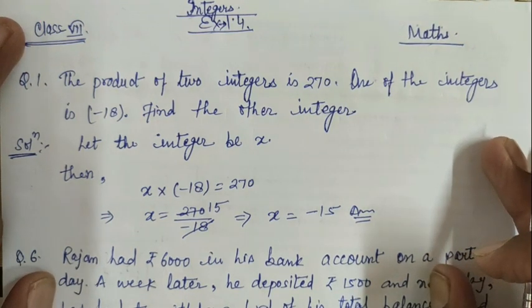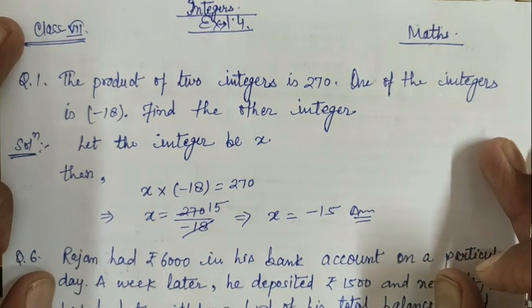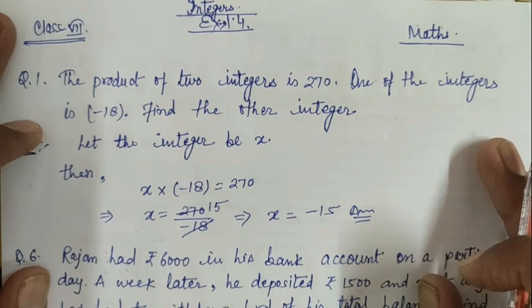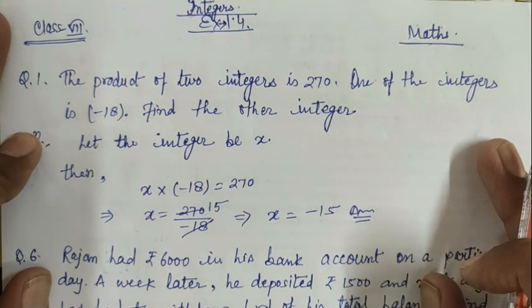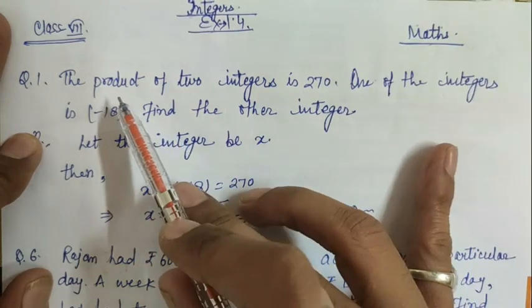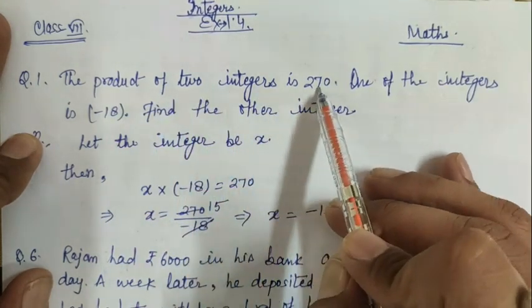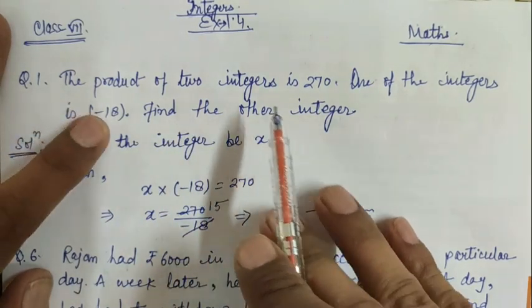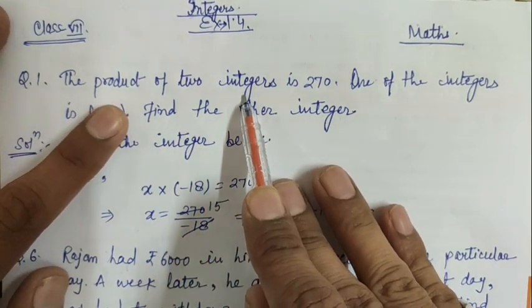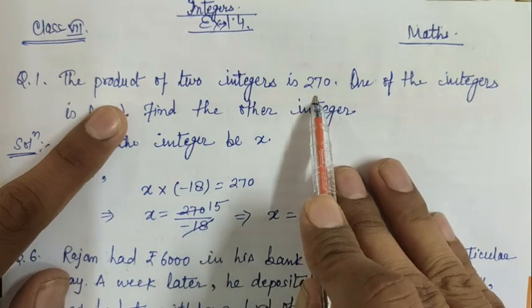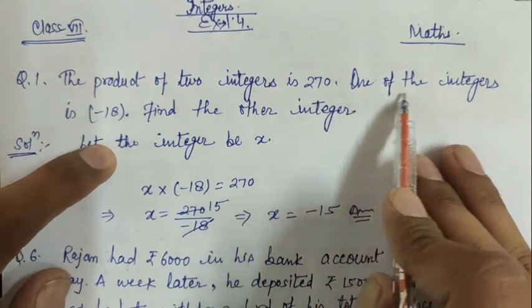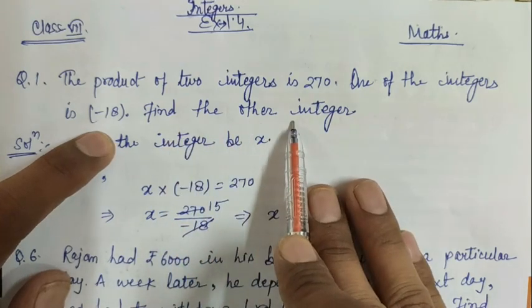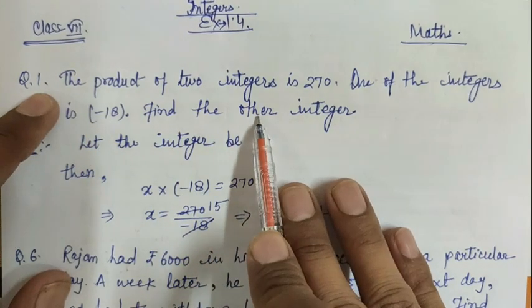Hello students, welcome to math online classes. In this video we will solve word problems related to integers. Our first question is: the product of two integers is 270. One of the integers is -18, find the other integer. This means that you have two integers multiplied, and the product given is 270. If you have one integer as -18, then you will find out the second integer.